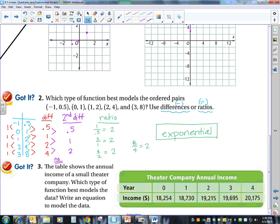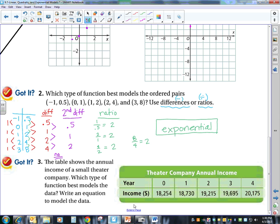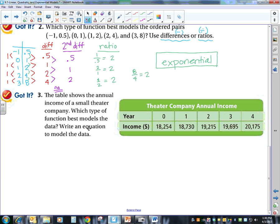Okay. One last example. We have a table showing the annual income of a small theater company. And they want us to tell them what type of function best models the data. And then write an equation to model that data. So we actually have two things that we have to do. We have to tell which type and write an equation. So we have a theater company annual income. You can go graph it, but those are some large numbers.